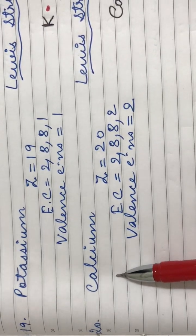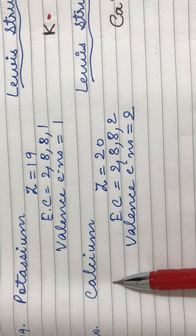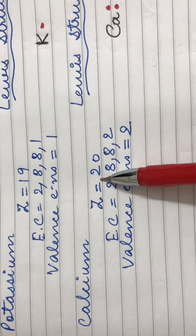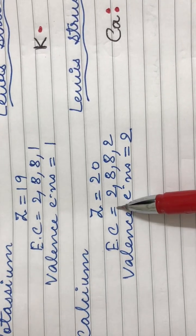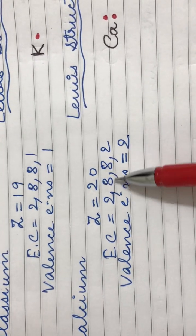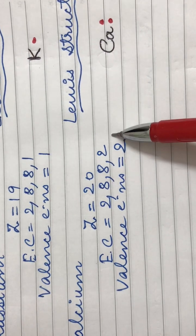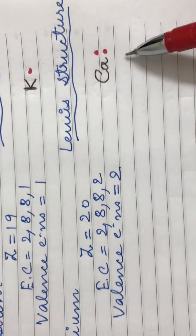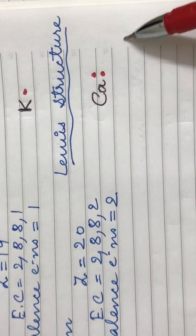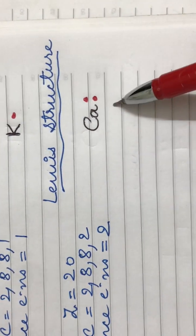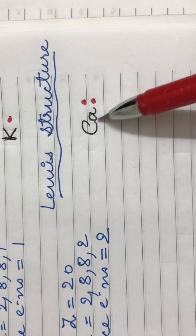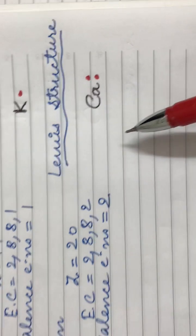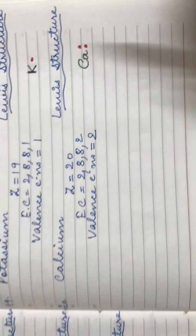Next comes the last, the twentieth element, calcium. Its atomic number is twenty. Its electronic configuration is 2,8,8,2 and it has two valence electrons in the outer shell. Therefore, the Lewis structure for calcium is the symbol Ca with two dots for the two valence electrons.